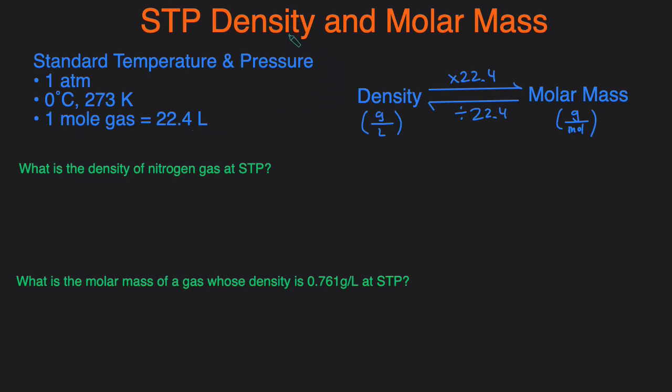Now how to convert between density and molar mass at STP? If you have the density and you want to figure out the molar mass then you're going to multiply it by 22.4. On the other hand if you have molar mass and you want to get to density then you would just divide by 22.4. By the way, the units for density is grams per liter and the units for molar mass is grams per mole.